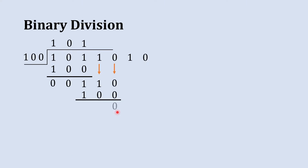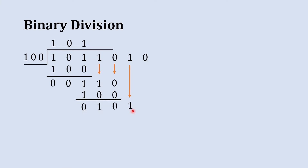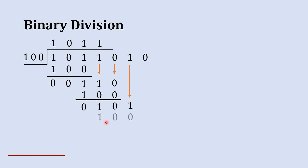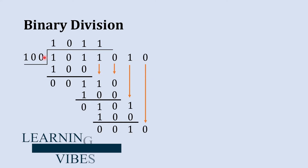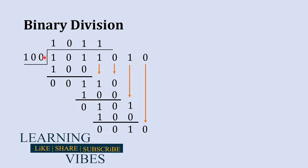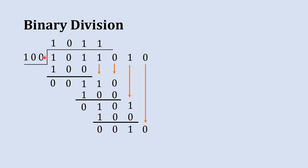Now divide: one 100 is 100. Subtract: 0 minus 0 is 0, 1 minus 0 is 1, 1 minus 1 is 0. Bring the next digit down to get 101. Is 101 greater than 100? Yes, so divide again: one 100 is 100. Subtract: 0 minus 1 — borrow needed — giving remainder 001. Bring the next digit down to get 10. Is 10 greater than 100? No.